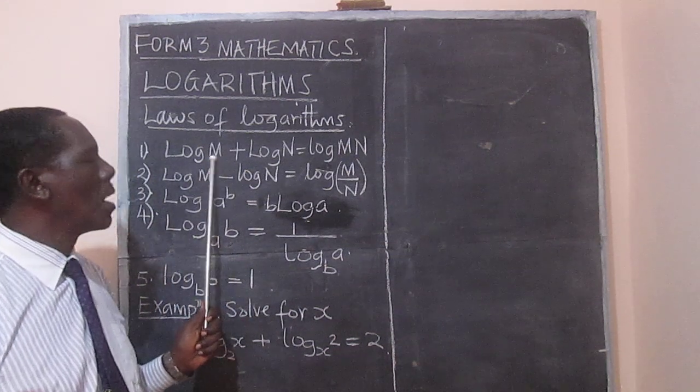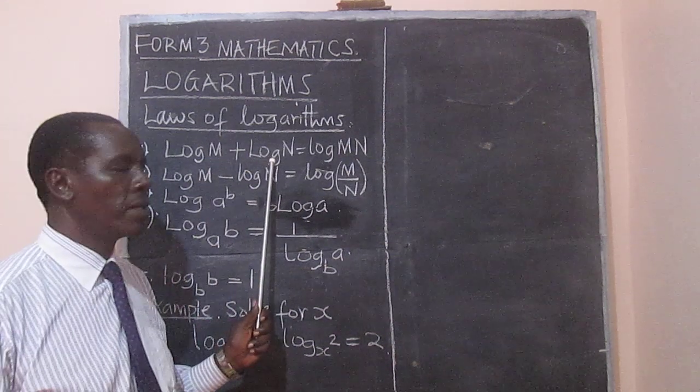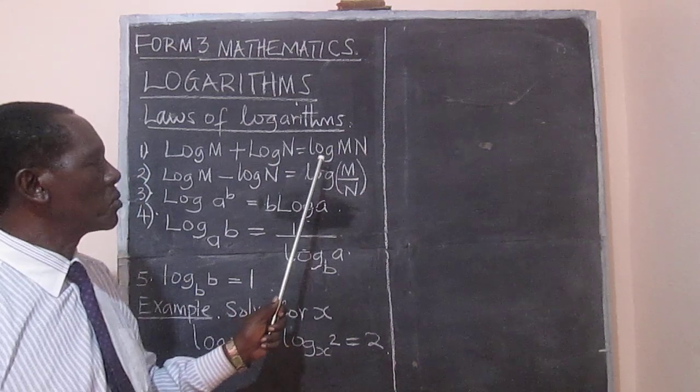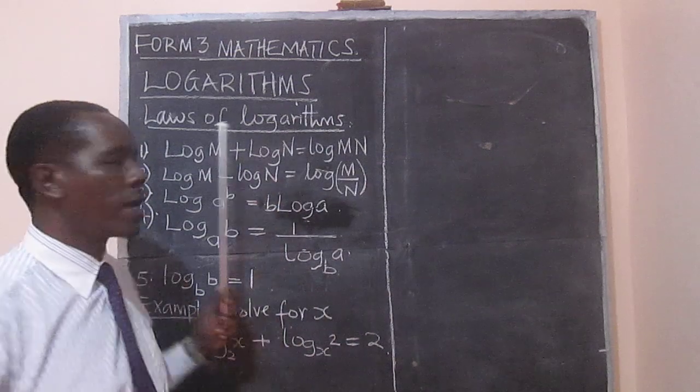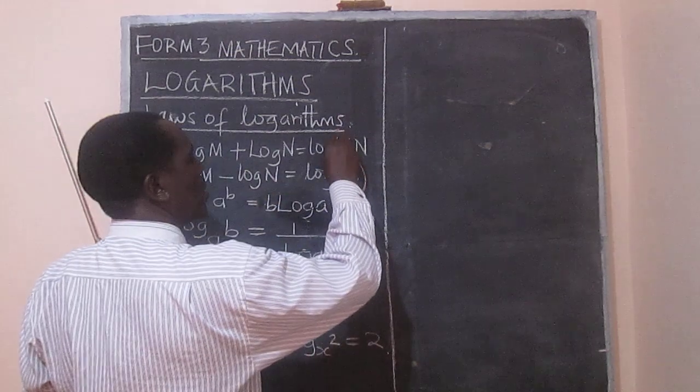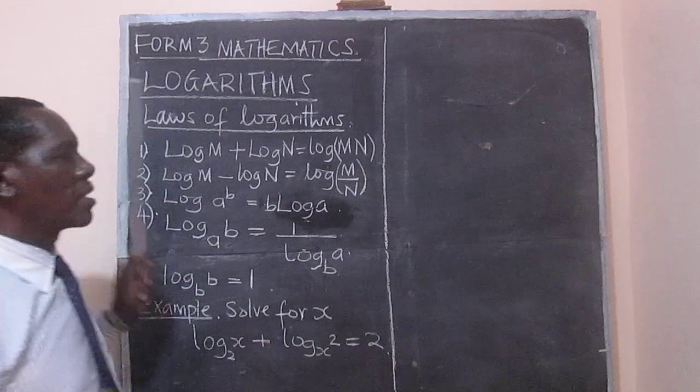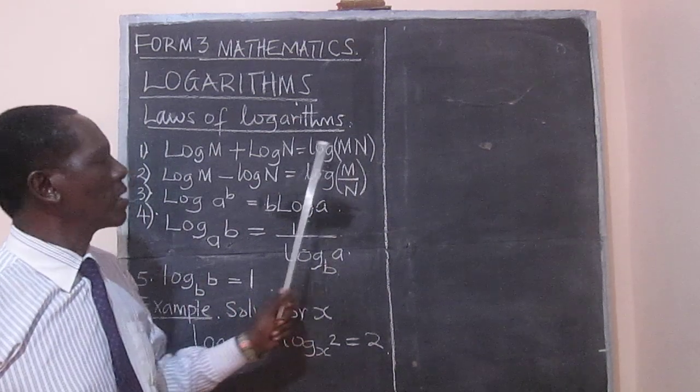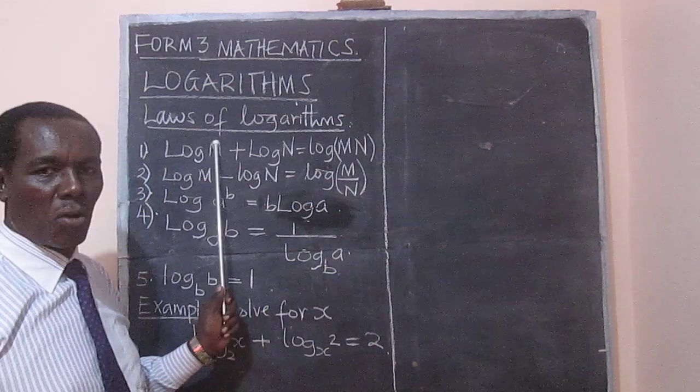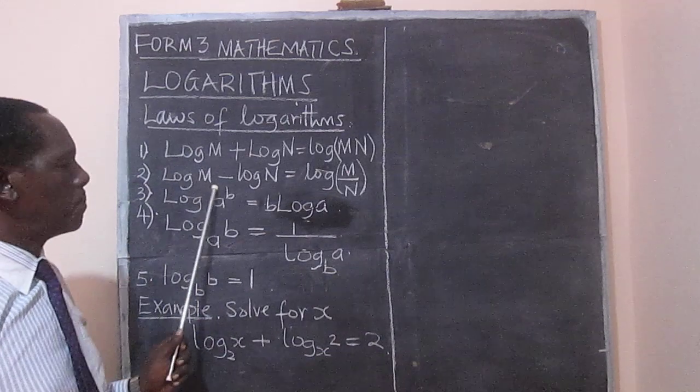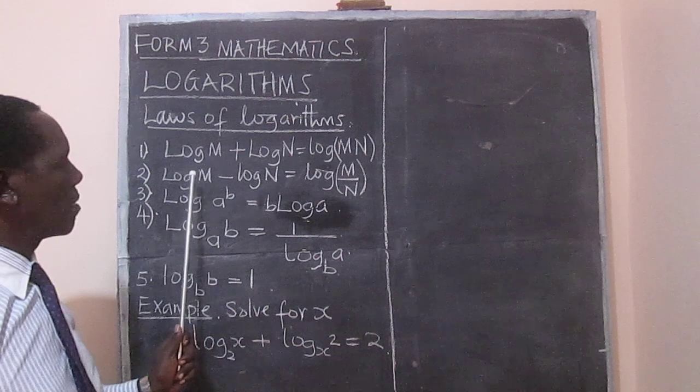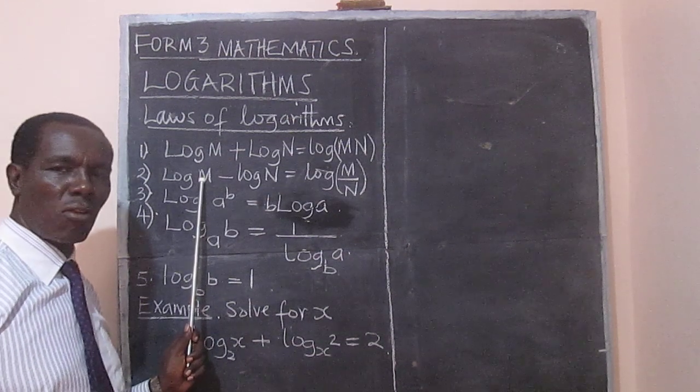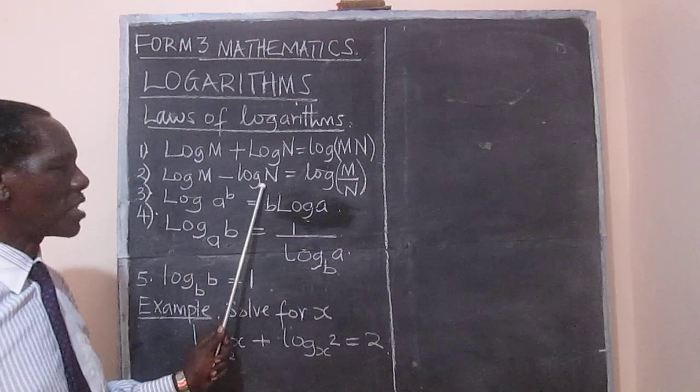Log m plus log n is equal to the log of m multiplied by n. So the logarithms of a product requires us to add the logarithms. When you are getting the quotient, the logarithms of a quotient, we get it by taking the log of one, subtracting the log of the other.